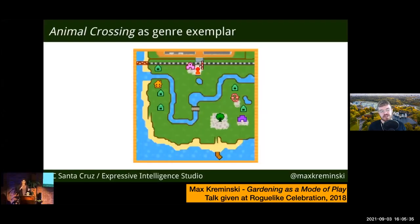The inspiration for the gardening metaphor comes from a couple of places. The first is Max Kraminski's amazing talk at the Roguelike Celebration in 2018 — all of those talks are on YouTube, and I really recommend looking at them. Max talks about gardening from the perspective of the player — games in which you have a gardening-like relationship with the game world, like Animal Crossing, where you're encouraged to engage with randomly generated worlds. As I rewatched Max's talk, I began to think about how gardening relates to how we build procedural generators as well.